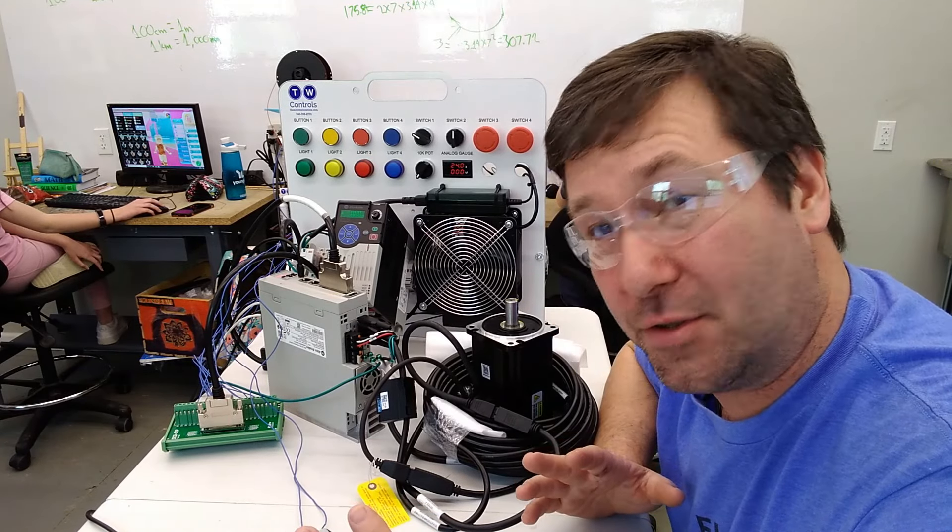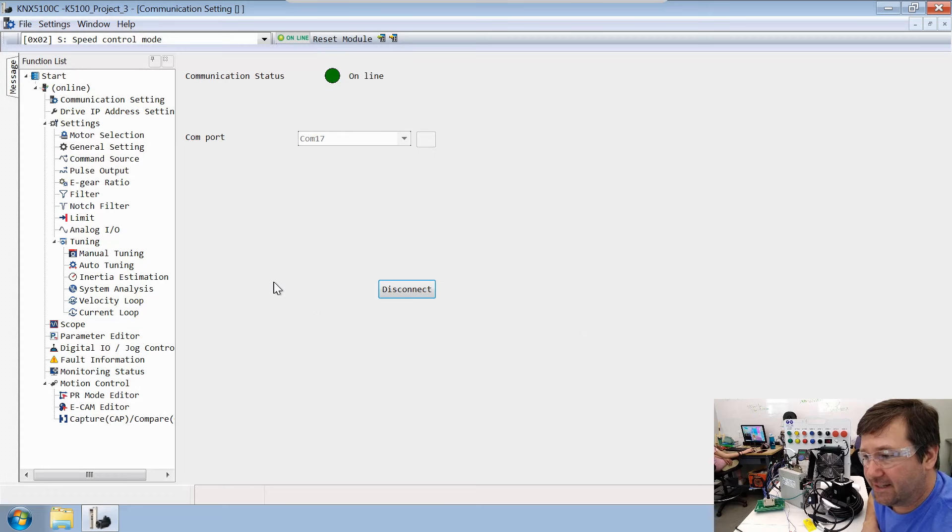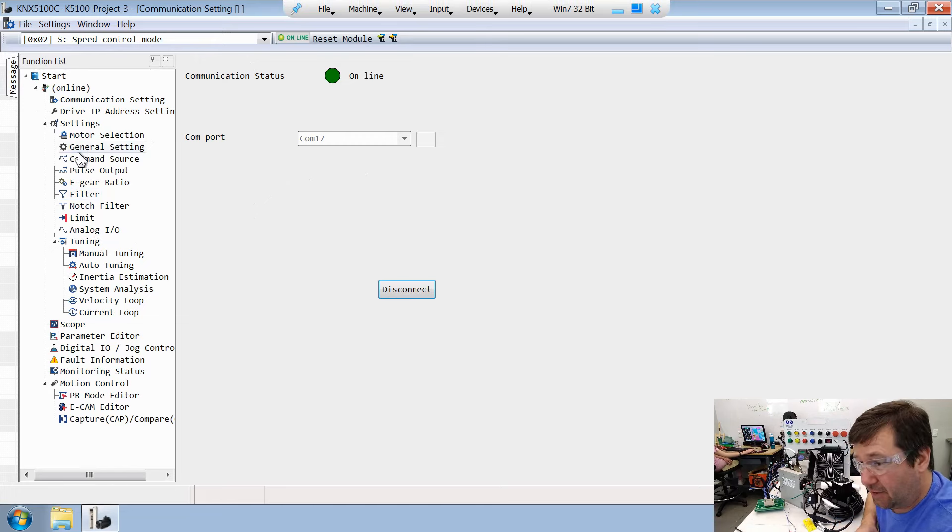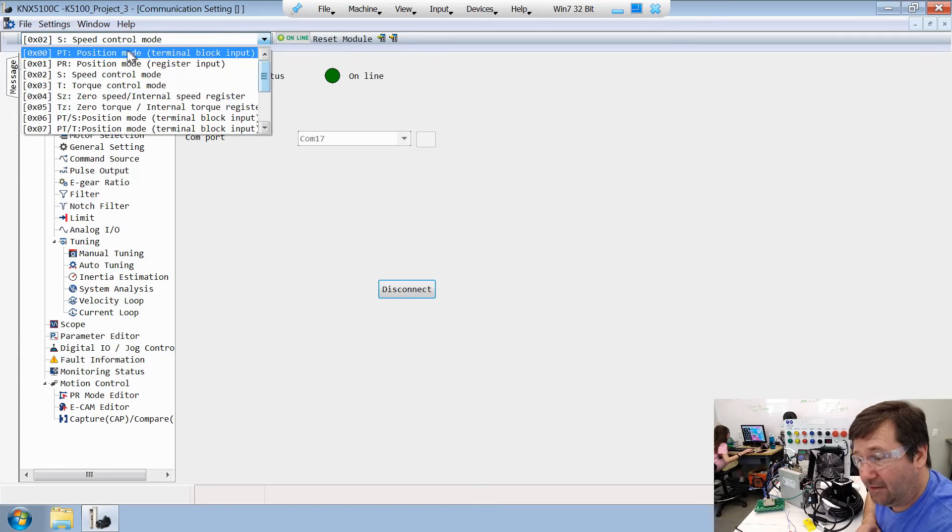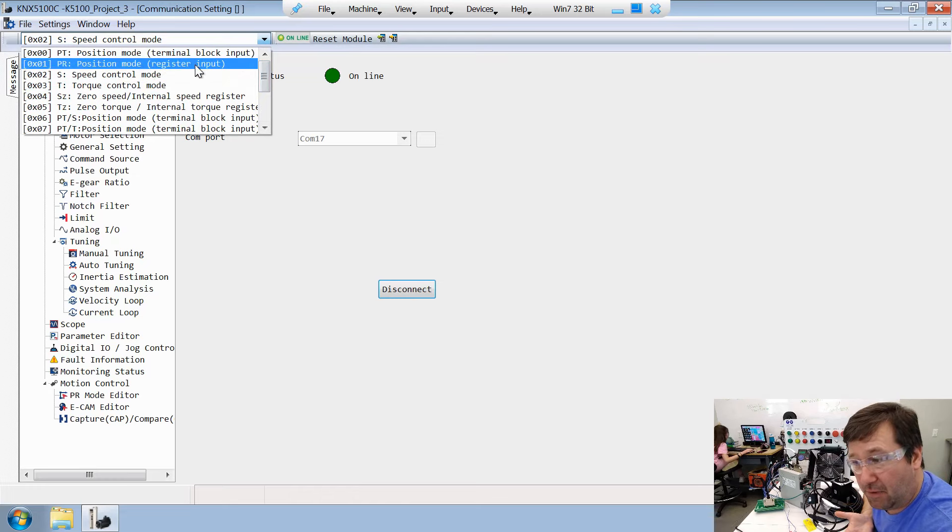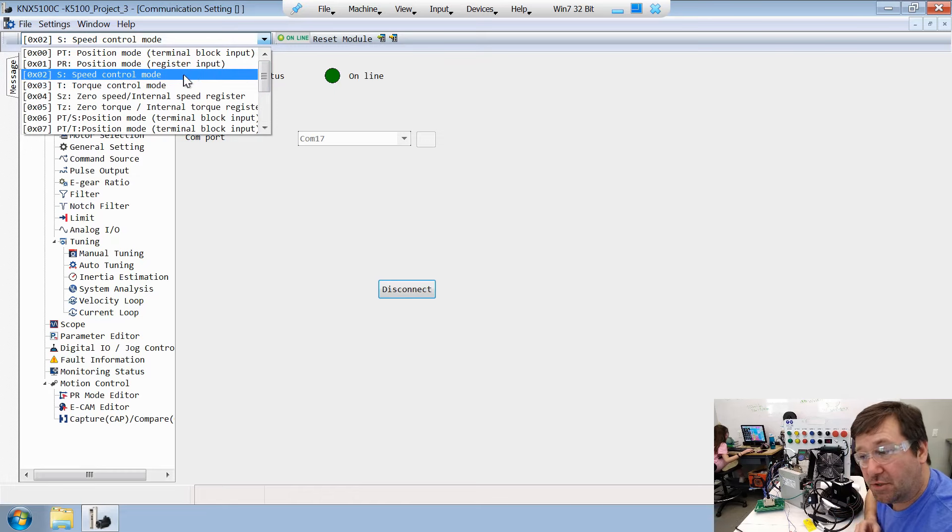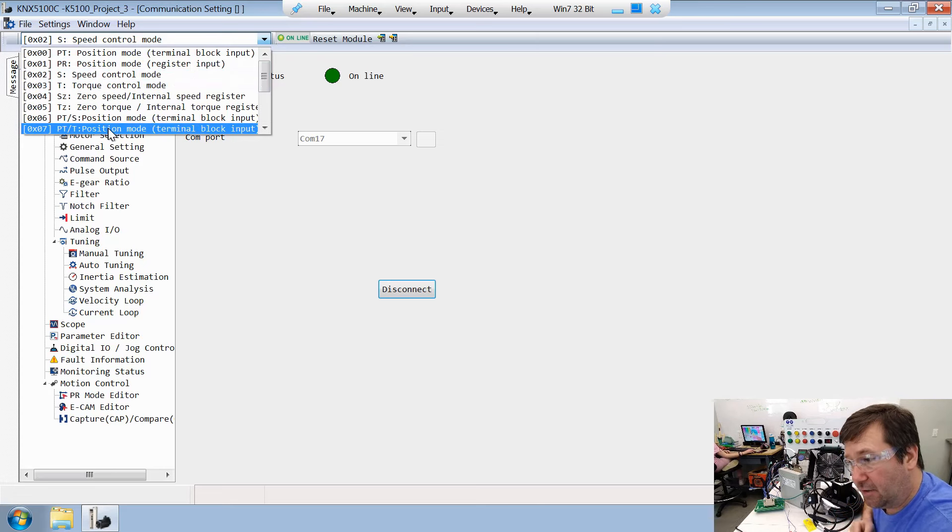Now let's take a quick look at how torque mode works. Here is the software for the Kinetics 5100. It's a really intuitive software with very little effort, you can figure out how to navigate through it. The only thing it took me a while to find because it was hidden right in plain sight is the mode. It's right here at the top, and it can have position mode by terminal block, position mode by register input, speed mode which we're currently in, torque mode which we're going to talk about, and a couple of other modes.